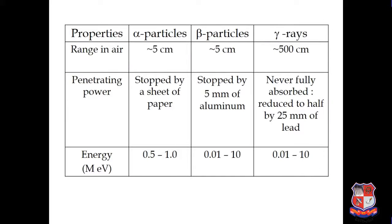When we consider range in air: alpha particle has a range up to a few centimeters but is easily stopped by a piece of paper. Beta particle has a range up to 5 centimeters but is easily stopped by a 5 mm aluminum sheet. And gamma rays have a range up to 500 centimeters in air.